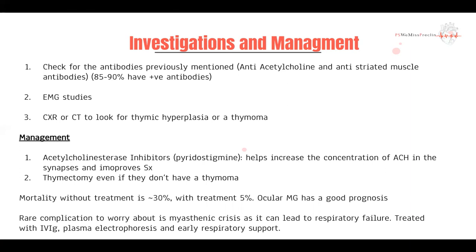Mortality and prognosis is overall relatively good. Without treatment, mortality is about 30%, and with treatment it drops to 5%. If you have myasthenia gravis purely with ocular involvement — ocular myasthenia gravis — that also has a relatively good prognosis.